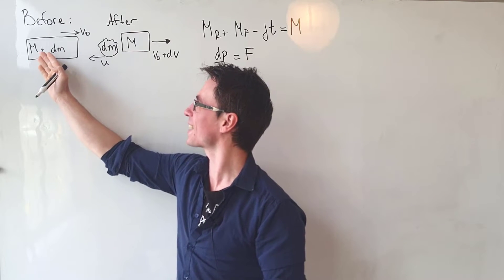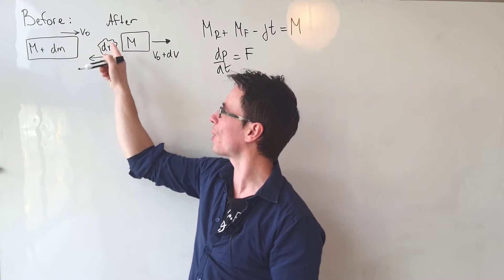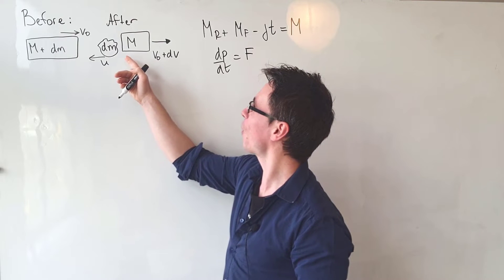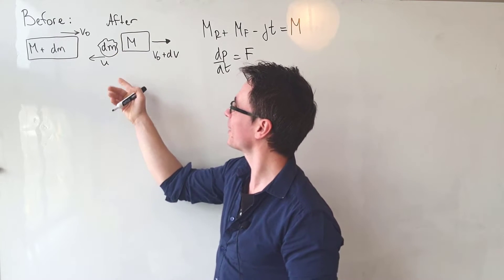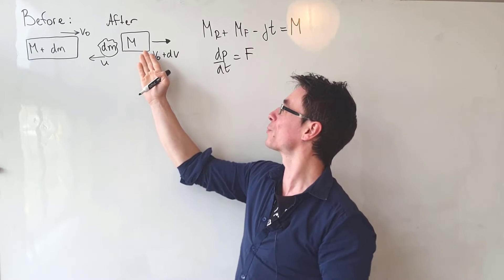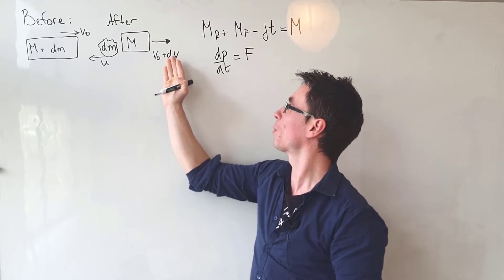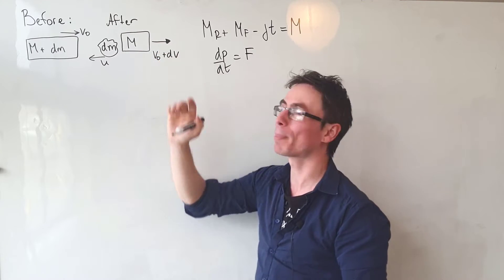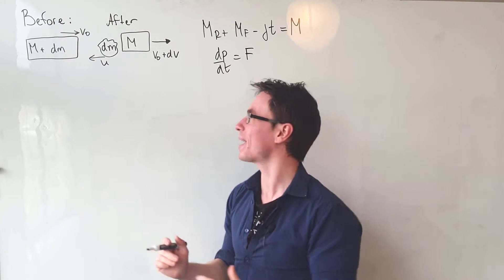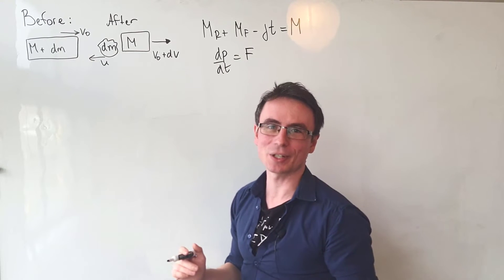Let's consider our system at a small fraction of time dt. We have the rocket of mass m plus a small amount of fuel dm moving at a constant speed v₀. Sometime later, a small amount of fuel dm is ejected at a speed u with respect to the rocket, meaning the rocket of mass m speeds up to v₀ + dv.